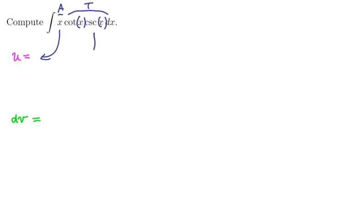So we would want to set the algebraic part to u and the trigonometric part to dv. So we're going to have u is equal to x, and we'll have dv is equal to cot x times cosecant of x times the differential dx.